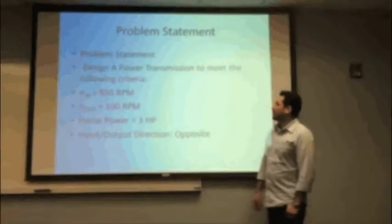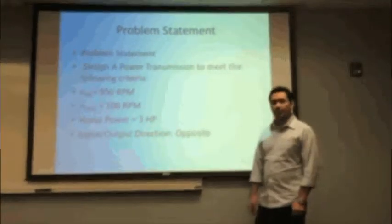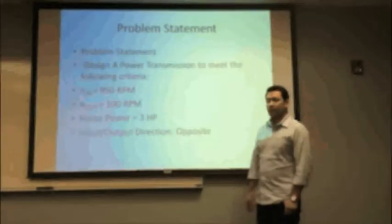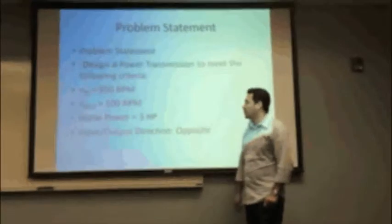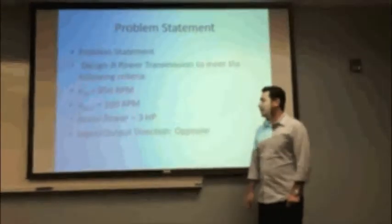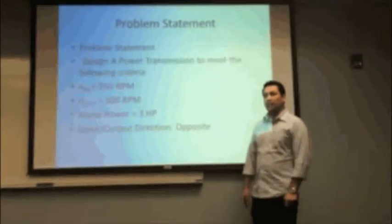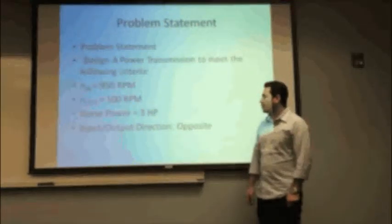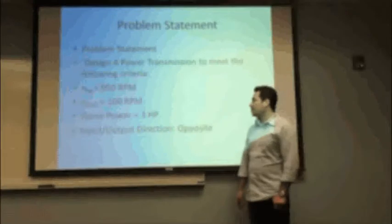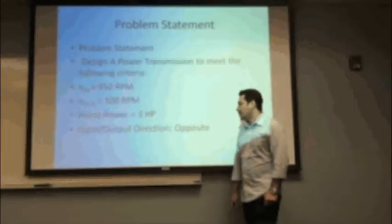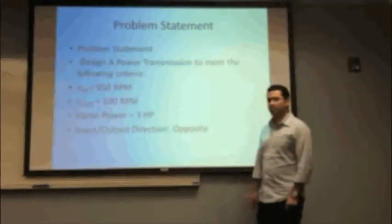Our problem statement: we were supposed to design a power transmission to meet the following criteria. We had an input of 950 RPM and were supposed to come up with an output of 100 RPM. The horsepower was supposed to be 3 horsepower, and the input and output direction was supposed to be opposite.